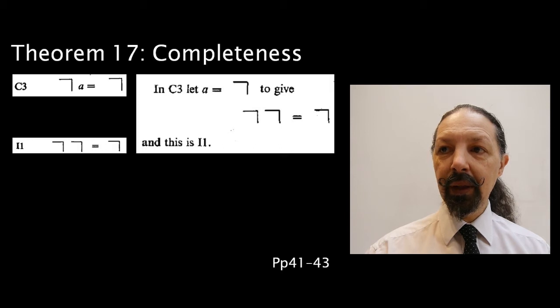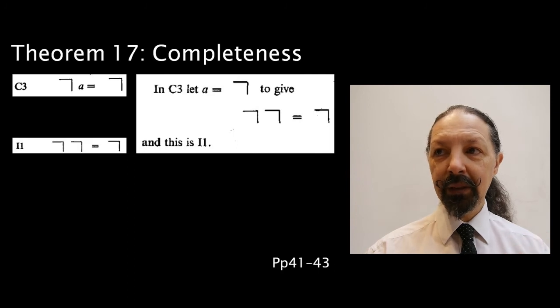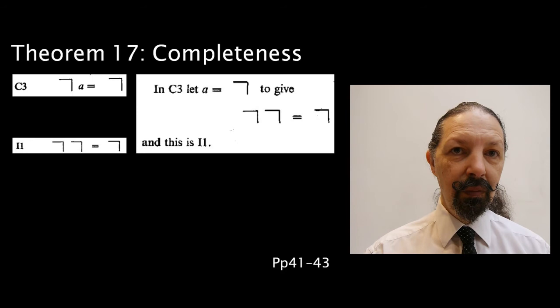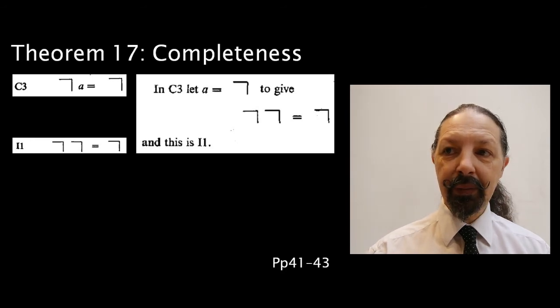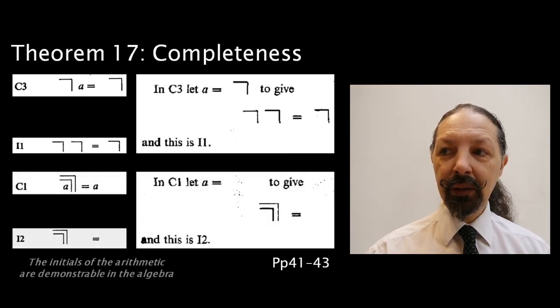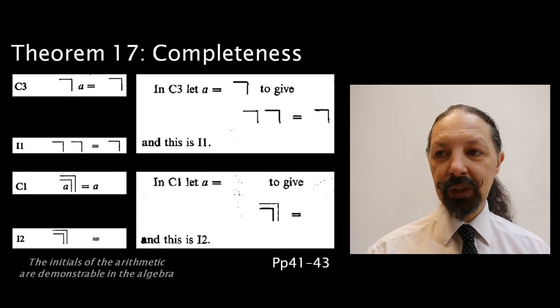Now in C3, if A is a mark, then we result in I1. In C1, if A is unmarked, we result in I2. The initials of the arithmetic are demonstrable in the algebra. One feeds off the other.